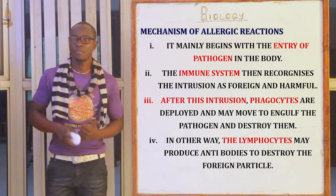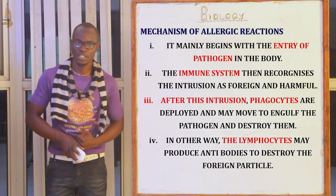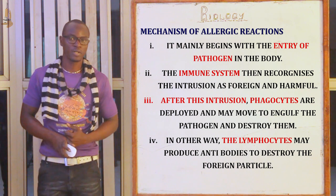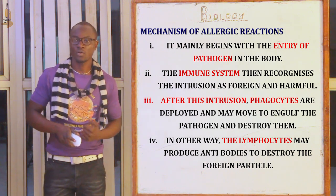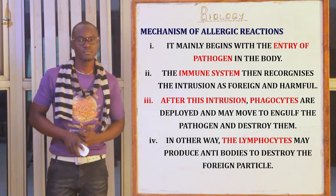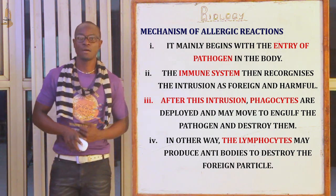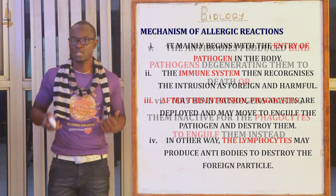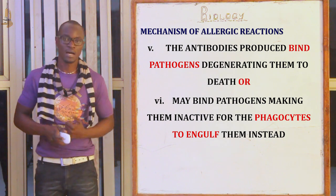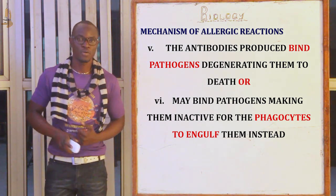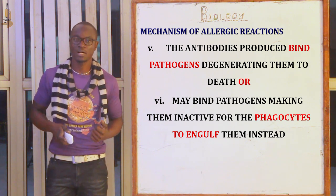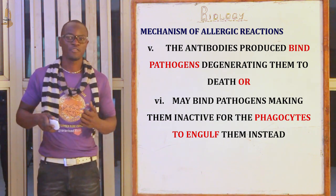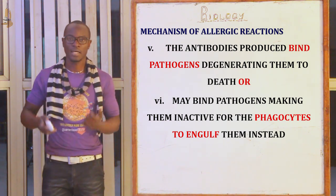Let's look at the mechanism of allergic reaction. An allergy mainly begins with the entry of the pathogen into the body. The immune system then quickly recognizes this intrusion. The phagocytes then move and engulf the pathogen, destroying them. Alternatively, the lymphocytes may produce different antibodies against the harmful microorganism. The antibodies produced may bind the pathogens, thereby eliminating them, or may bind the pathogens for the phagocytes to come and engulf them.